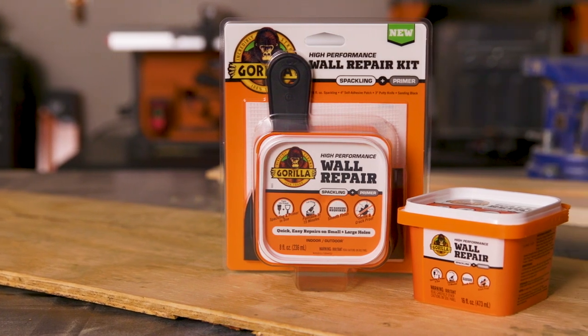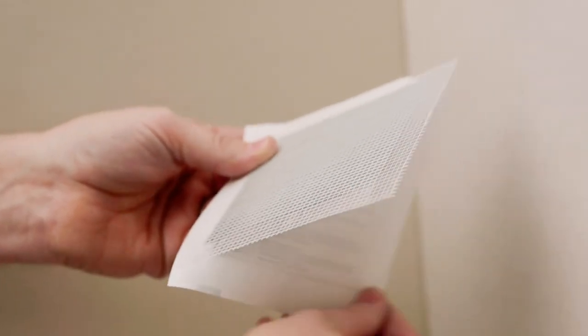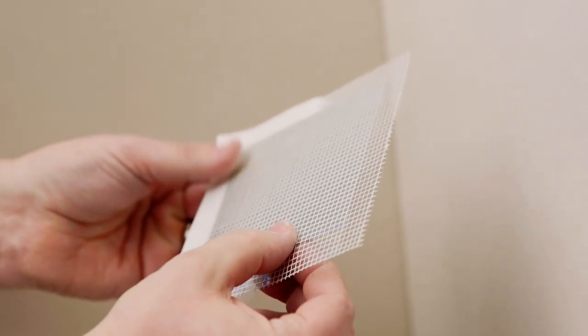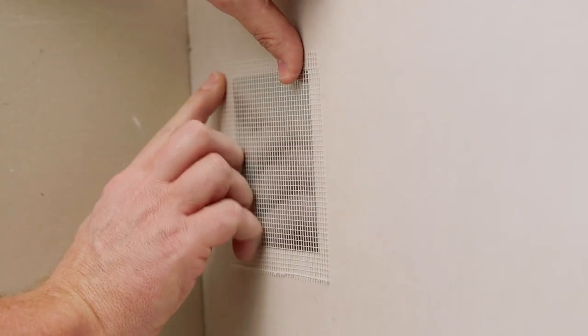If using the wall repair kit, after cleaning the surface, remove the liner on the provided patch. Adhere the patch to the wall over the hole and smooth out the mesh.